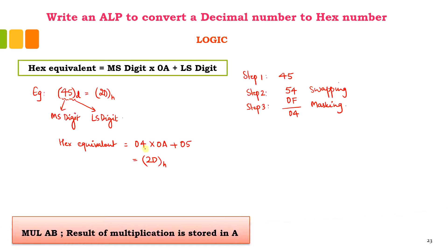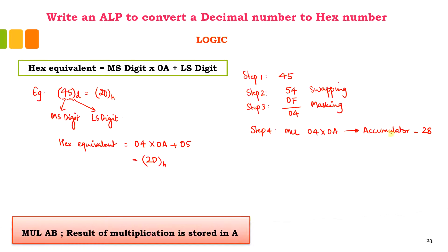The next step is to multiply this with 0A. You are going to multiply this result — 04 — with 0A, and the result of this multiplication will be stored in the accumulator. The result was 28 as we saw it using the calculator, so this 28 will be stored in the accumulator.